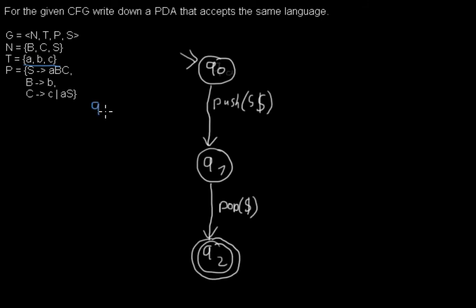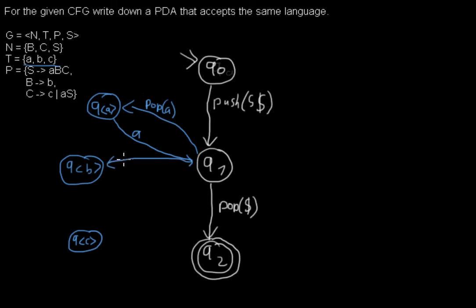So there's one state for the A, one for the B and one for the C. And they are all constructed in the same way. There's a transition that pops the A from the stack, and if that's done there must be an A read from the input string. And that's the same for every one of those three states.